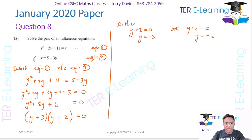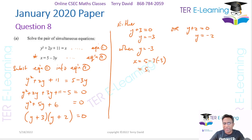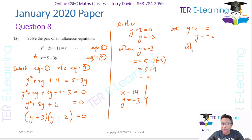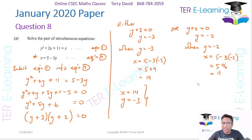So those are my two y values. Now we need to figure out what the x values are, so I would substitute into my linear equation. When y = −3, x = 5 − 3(−3) = 5 + 9 = 14. So one solution is x = 14, y = −3. When y = −2, x = 5 − 3(−2) = 5 + 6 = 11. So my second solution is x = 11, y = −2.